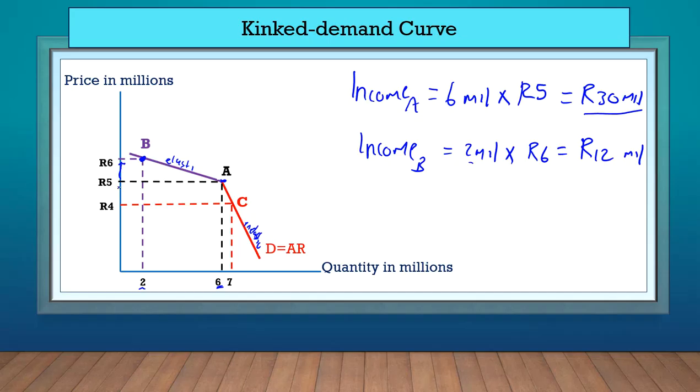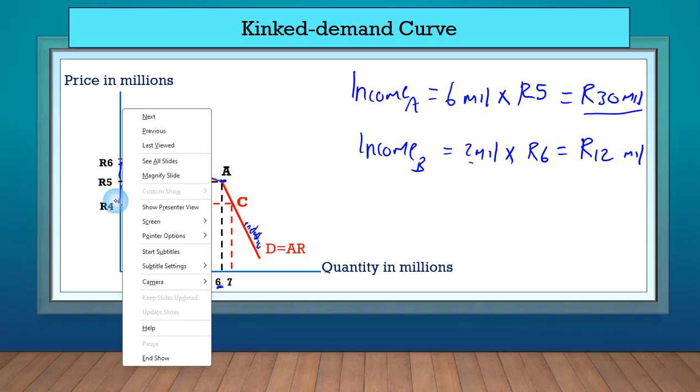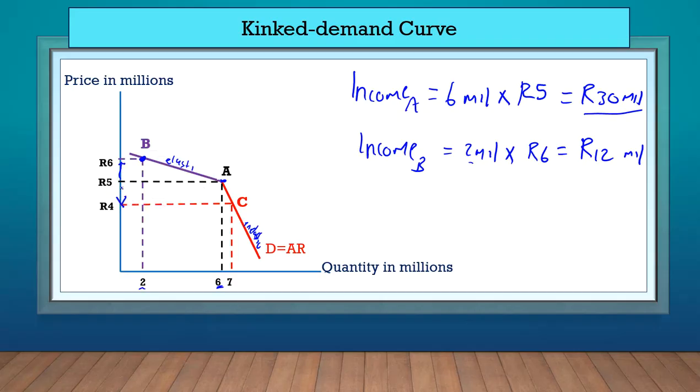What would happen then if another firm decided to lower their price in order to attract more customers? So they lower their price from 5 rands to 4 rands. They will now be at point C, because 4 rands is at point C.